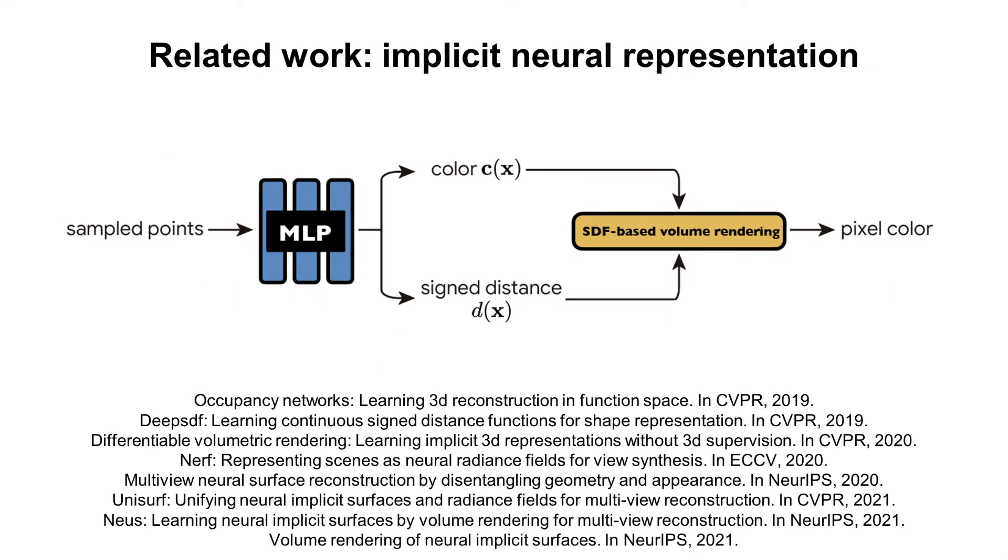Recently, some methods model 3D scenes as implicit neural representation and learn it from images with differentiable renderers. In particular, NeRF and VolSDF use signed distance field to represent scene geometry and render it into images based on volume rendering.